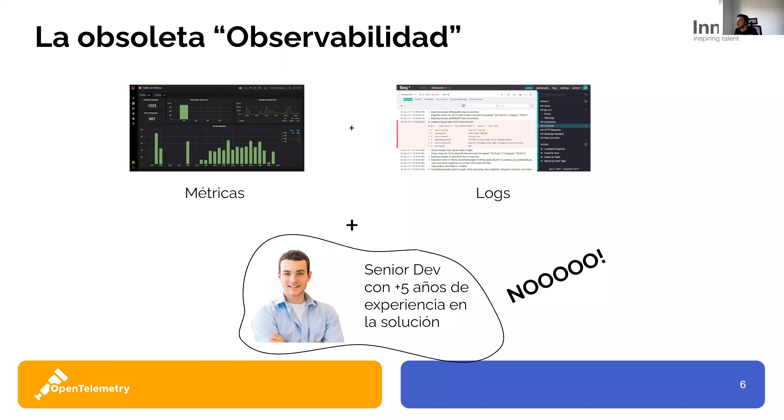¿Qué sucede cuando por primera vez desarrollamos nuestra aplicación y la enviamos al cloud o la ejecutamos en local? Realmente lo que vemos es nada. Por ejemplo, viniendo del mundo .NET, podemos activar el profiler, que te da información, pero no va acorde a lo que necesitamos, que es el nivel del flujo de nuestra aplicación. Vemos logs, métricas, podemos activar counters. Esto es lo que yo llamo un poco la obsoleta observabilidad.